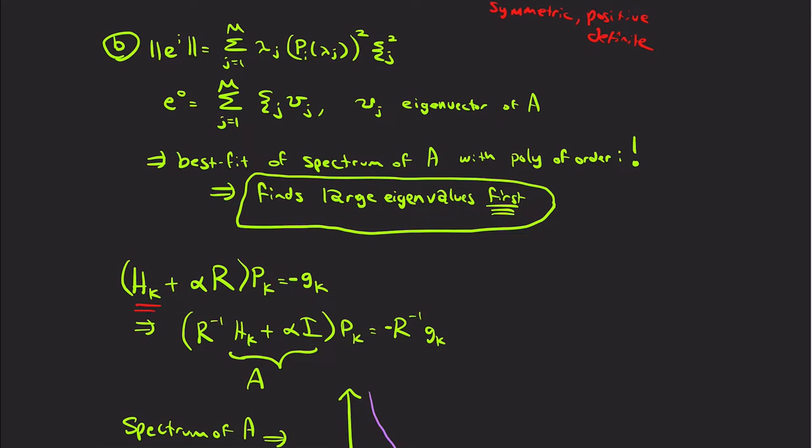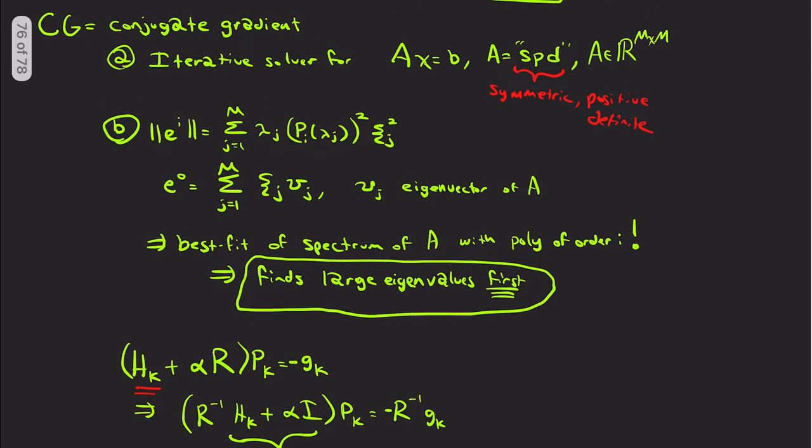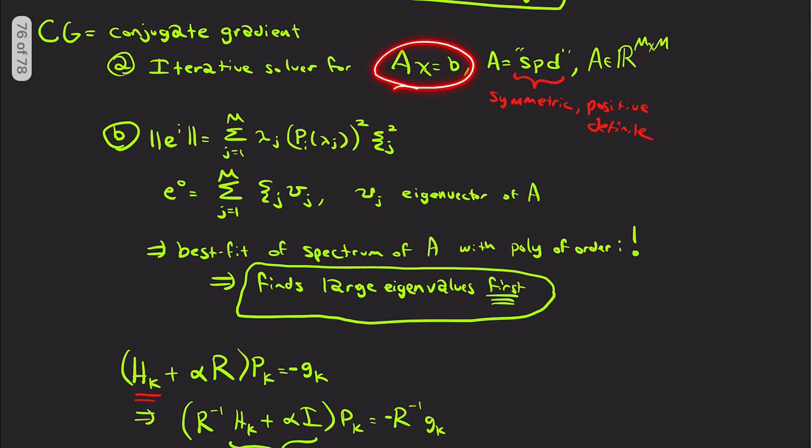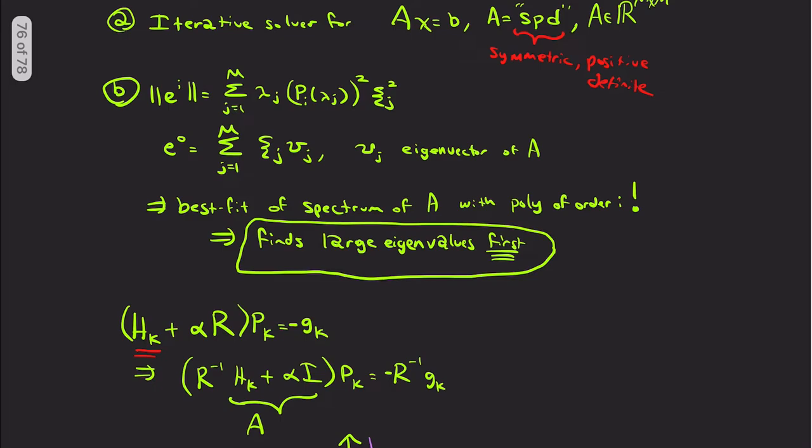And so after a certain number of iterations, you're not going to gain much. And so the idea here is to cut off the actual solving of the linear system ax equals b whenever I hit this point. I don't want to actually get all the eigenvalue information because at the end of the day, we have noise in our data. And so we can't fit it anyway. We're going to be fitting noise.